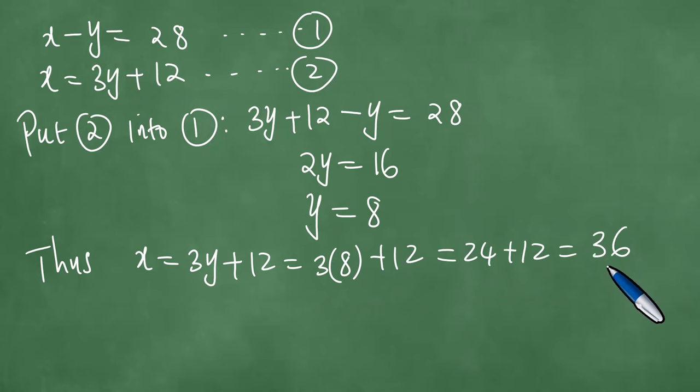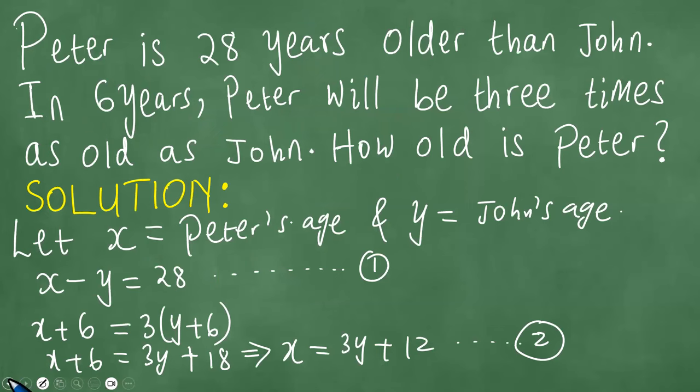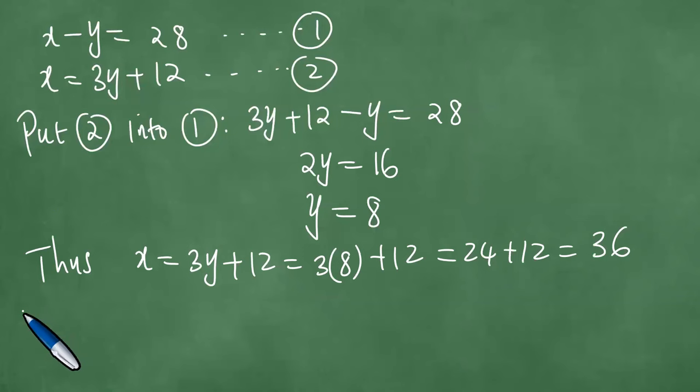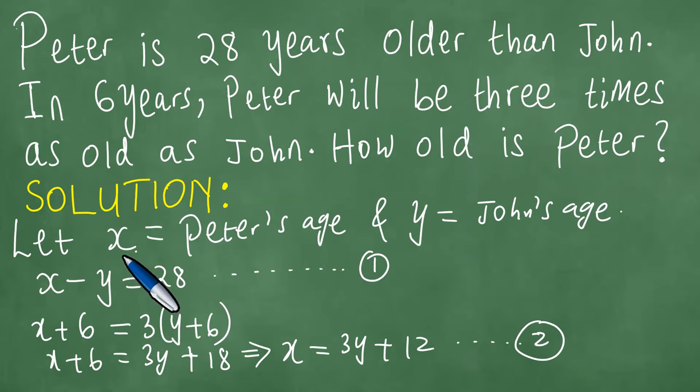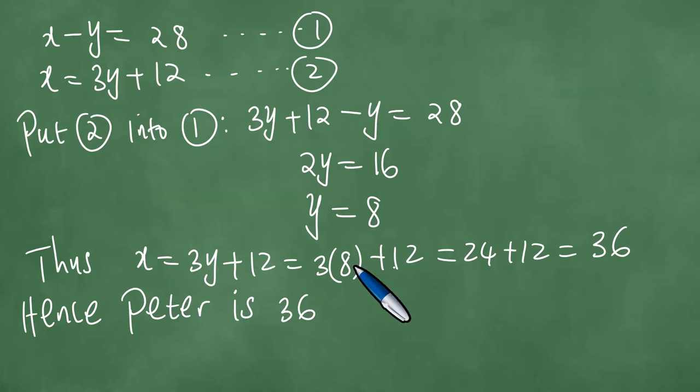Obviously, the question was, how old is Peter? Hence, Peter is 36, because we said in the beginning that x actually represents Peter's age. And we have already got the x value, which is 36. Hence, Peter is 36 years old.